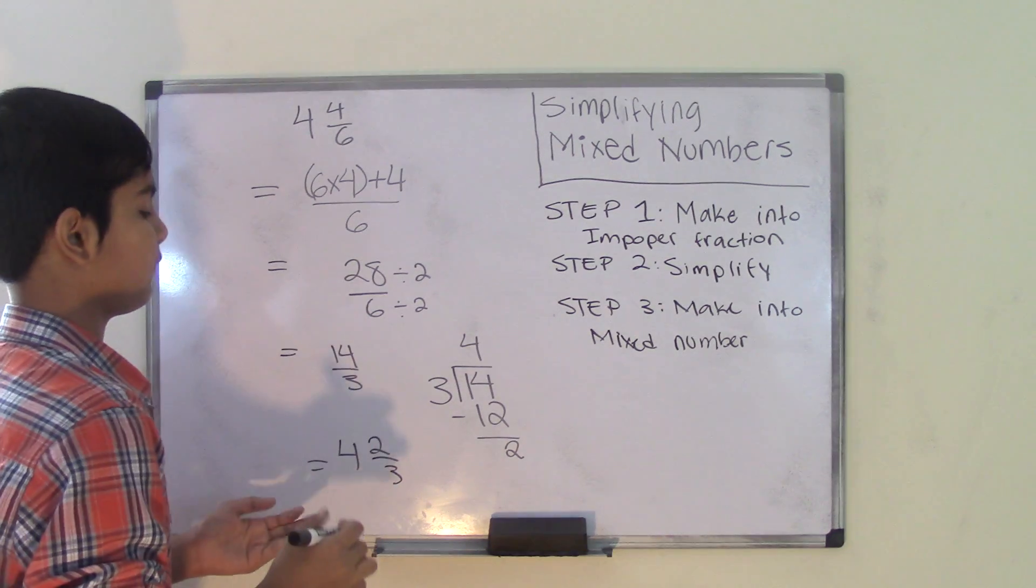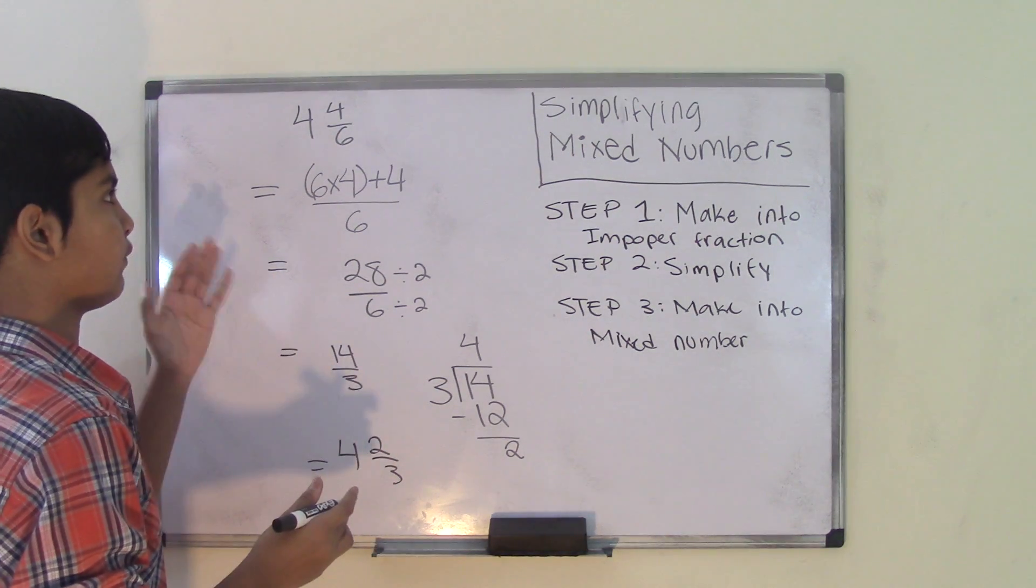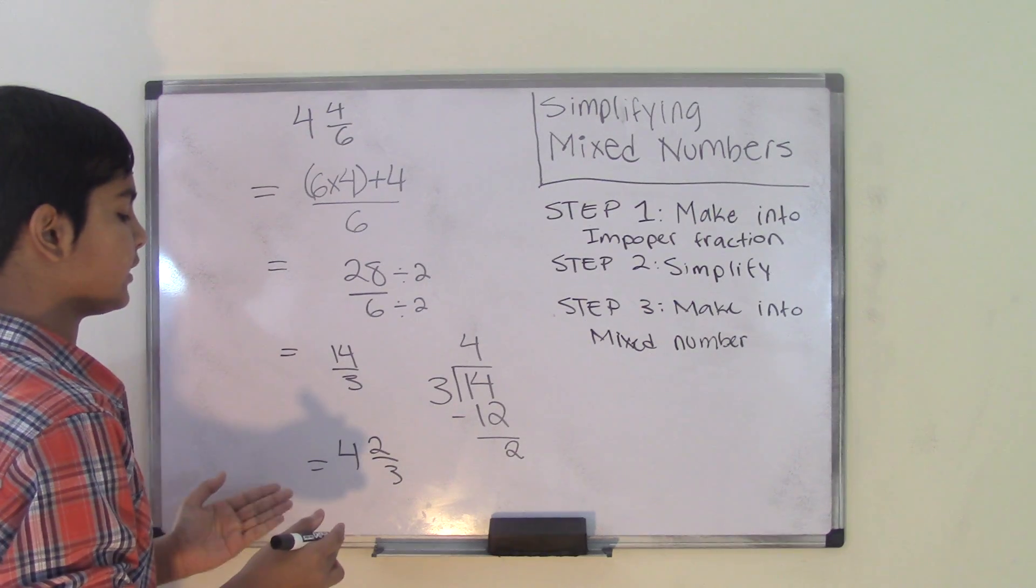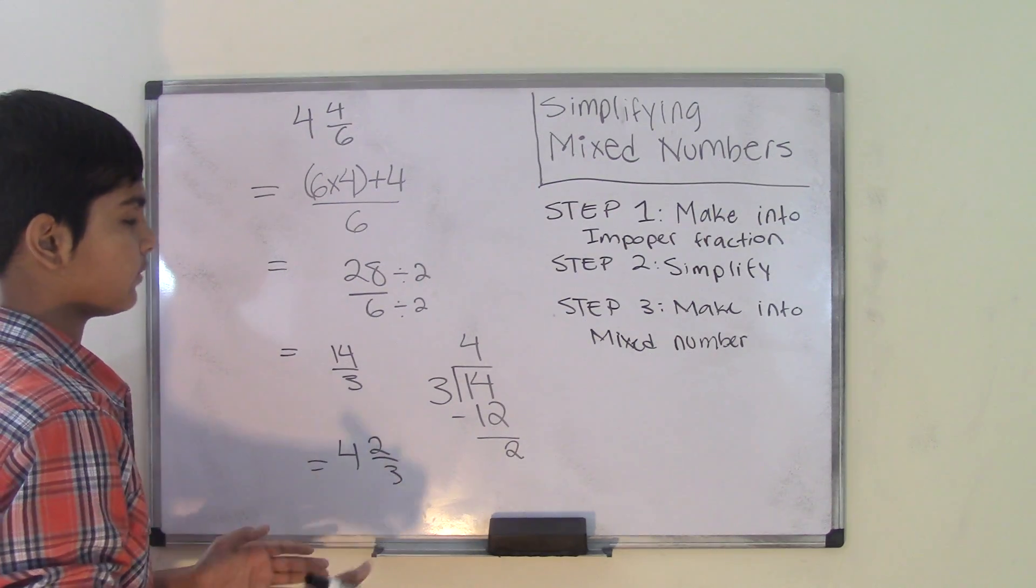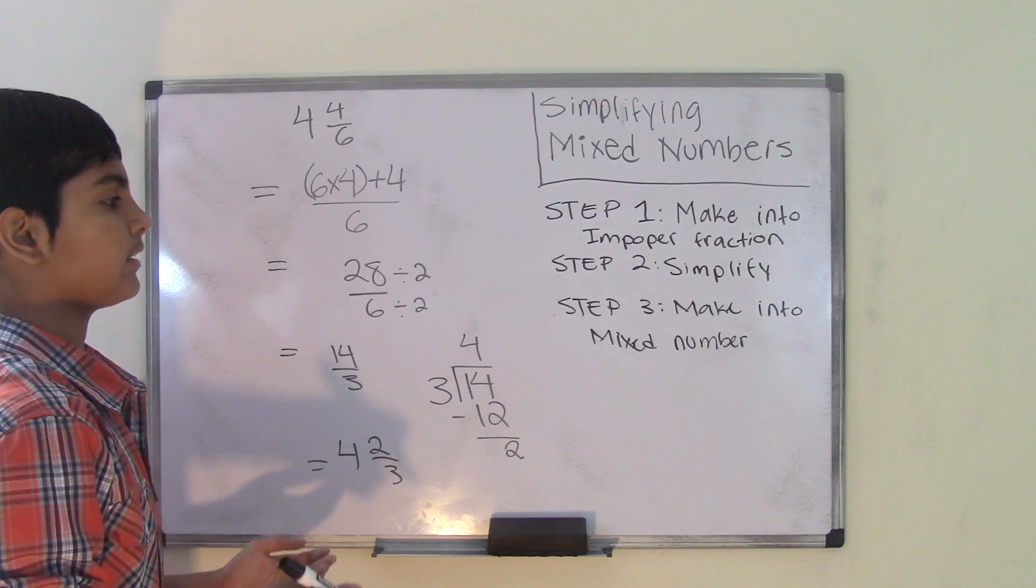So the simplified form for the mixed number 4 and 4 over 6 is equal to 4 and 2 over 3. So this is how you simplify a mixed number.